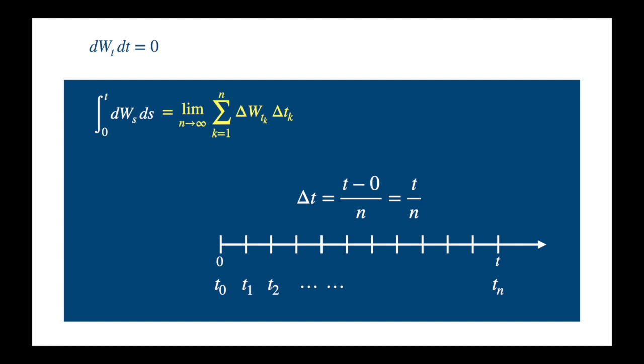By the way, delta W and delta t are just the changes in the value of W and t over the subintervals. So easy to calculate once one has a Brownian path over time.